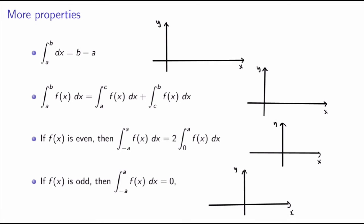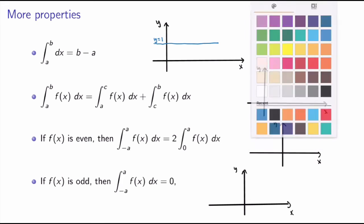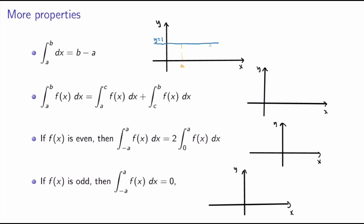Here are four more properties deducible from the geometric interpretation. First: the integral from a to b of the constant function 1 equals b minus a. The graph of f equals 1 is just the line y equals 1, so the integral calculates the area under that line, which is a rectangle of width b minus a and height 1, giving area b minus a.